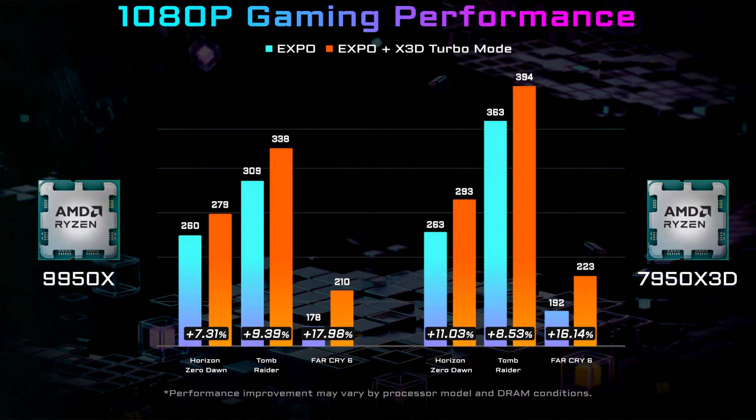It assigns CPU cores to gaming applications to let the processors focus completely on the games, and also does some bandwidth tuning and hardware power balancing. However, the final performance also depends on the memory parameters.